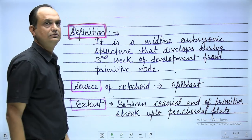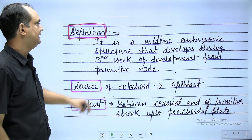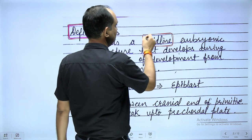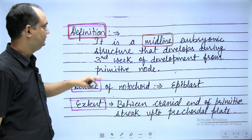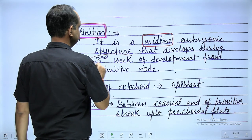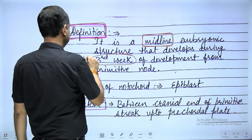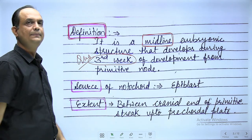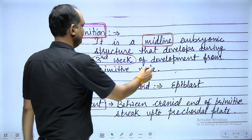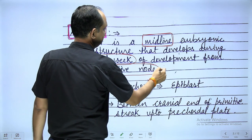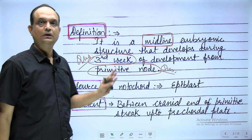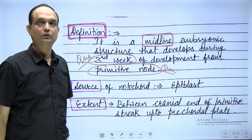Notochord is a midline embryonic structure. You will find it in the midline during embryonic life, and it develops during the third week of development. The notochord develops from the primitive node, so the precursor of notochord is the primitive node.